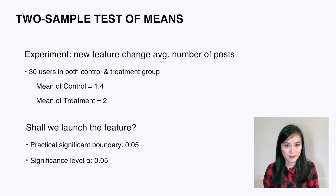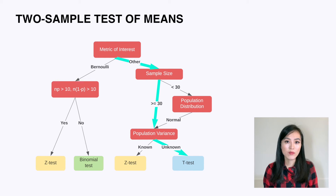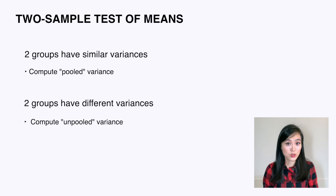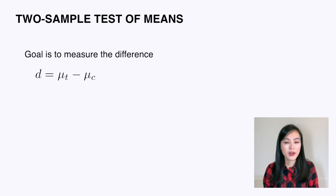Clearly we're not dealing with a Bernoulli population and the variances are unknown. Based on the decision diagram from part one, we choose a two-sample t-test to compare the differences between control and treatment. We are told that the population variances in the two groups are similar, so we can calculate the pooled variance. If the variances were different, we would need the unpooled unequal-variance approach, which we'll cover shortly.